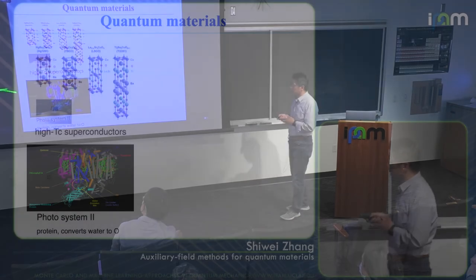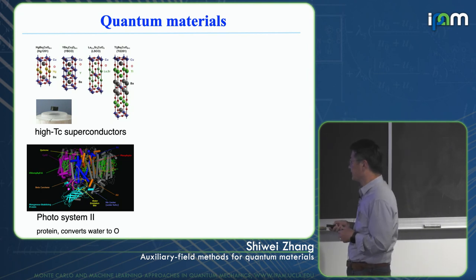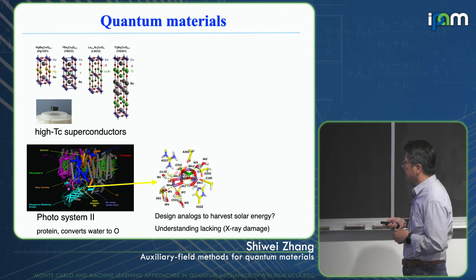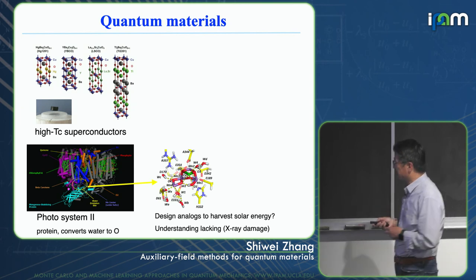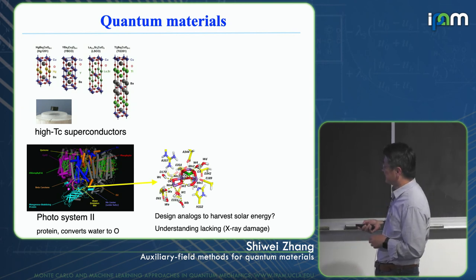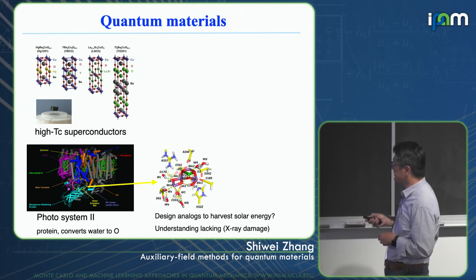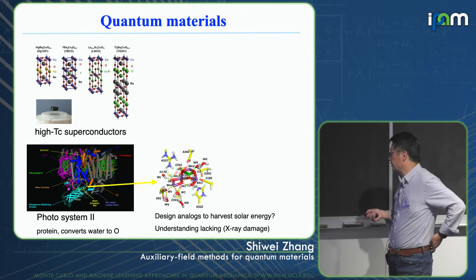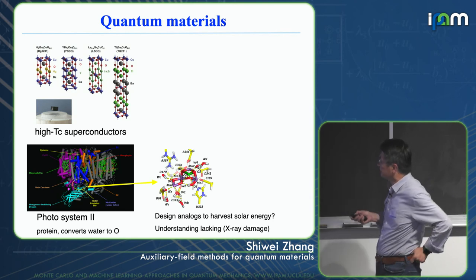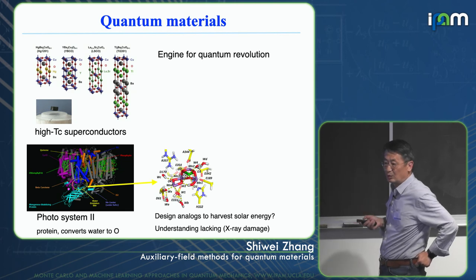This is an example from chemistry: Photosystem 2, a protein that converts water to oxygen. My friends tell me that this little piece here can be simplified to something like this. The goal is to design analogs to harvest solar energy, but understanding the structure is challenging. Experimentally, the X-ray would damage this sort of structure. So the idea is these things are the engine for a quantum revolution.